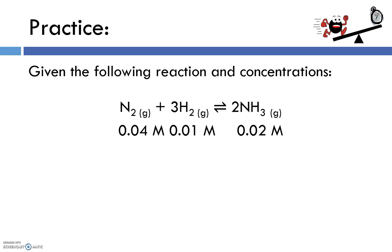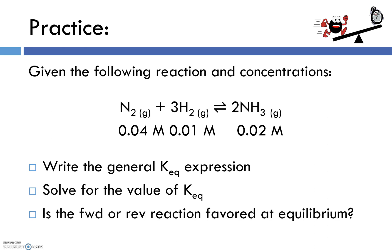Let's go ahead and try a practice problem. In this case, we've got nitrogen and hydrogen reacting to form ammonia, and we've got equilibrium concentrations of the three substances. We're going to write a general KEQ expression, we're going to solve for the value of KEQ, and then based on that value, we'll determine whether the forward or reverse reaction was favored at equilibrium. So I'm going to pull that up in my practice problems, make it a little bit easier to work with.